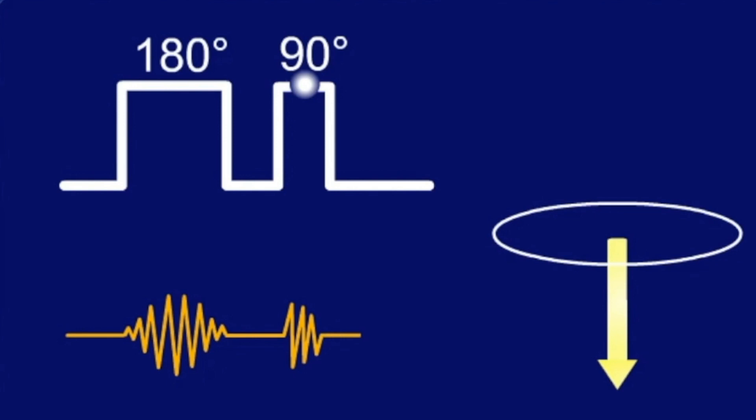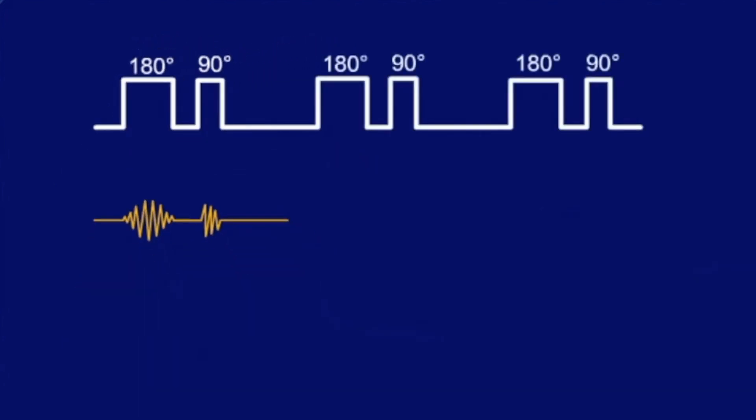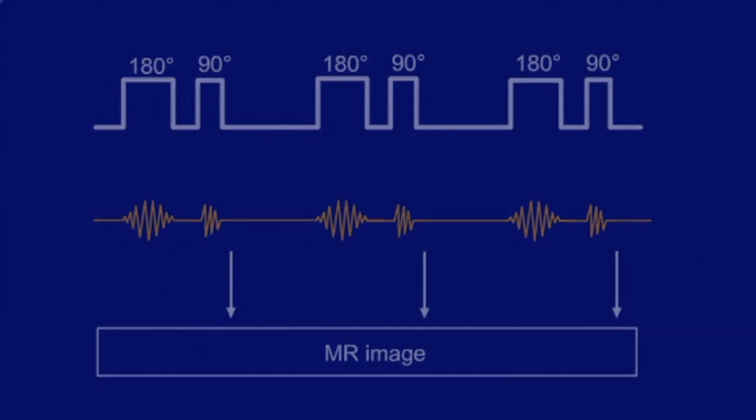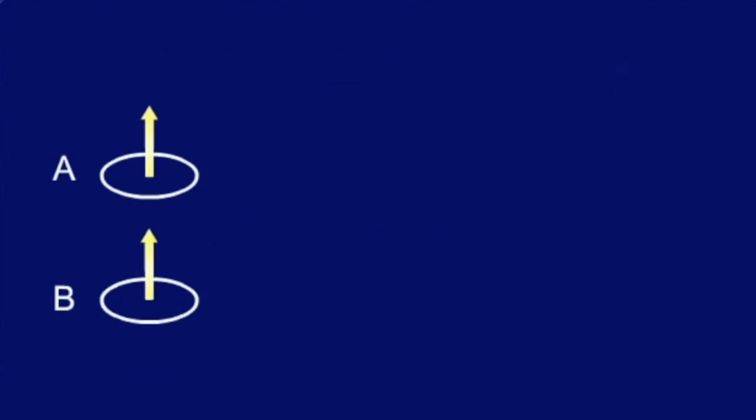The 90-degree pulse tilts the magnetization into the transversal XY plane so it can be measured and received, similar to the spin echo sequence. We use several pulse cycles for signal measurement. Let us now compare two tissues with a different T1.